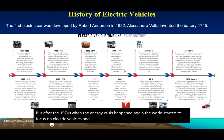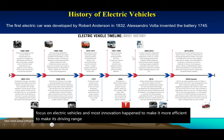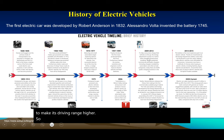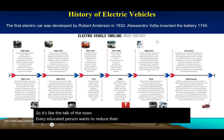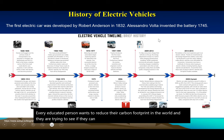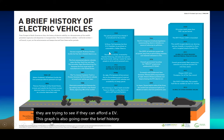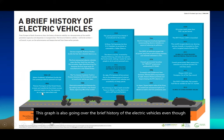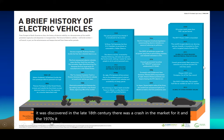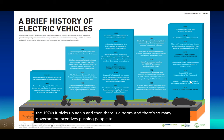Most innovation happened to make electric vehicles more efficient and to increase their driving range. Now it's the talk of the town. Every educated person wants to reduce their carbon footprint and is trying to see if they can afford an EV. This graph goes over the brief history: there was a crash in the market, then the 1970s pickup, then a boom driven by government incentives pushing people toward energy efficient vehicles.